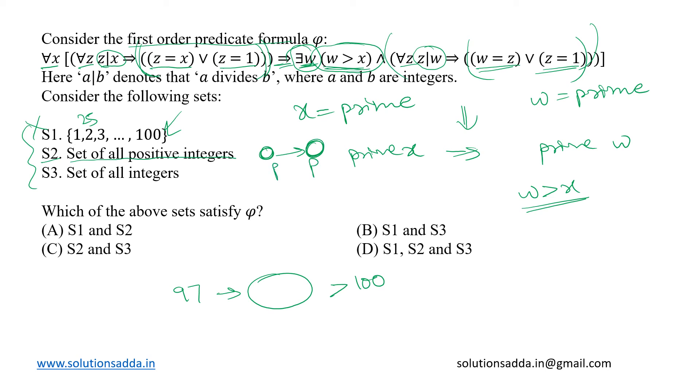And the same applies for set S3, which is a set of all integers. Here we can do the same thing for negative numbers and positive numbers as well. So for any given number we can definitely find the next greater prime number.